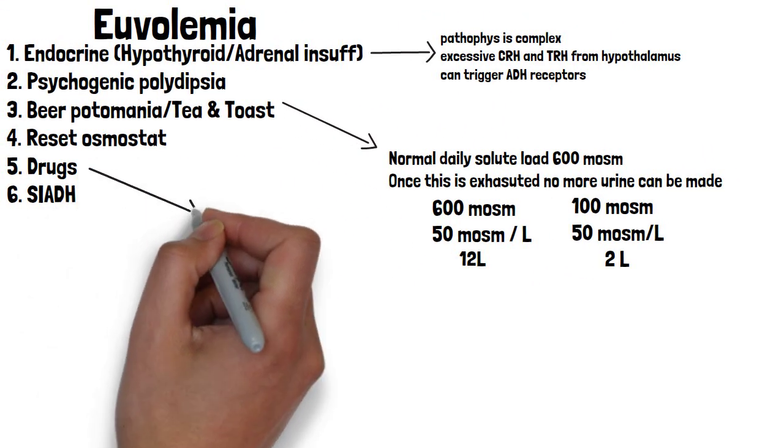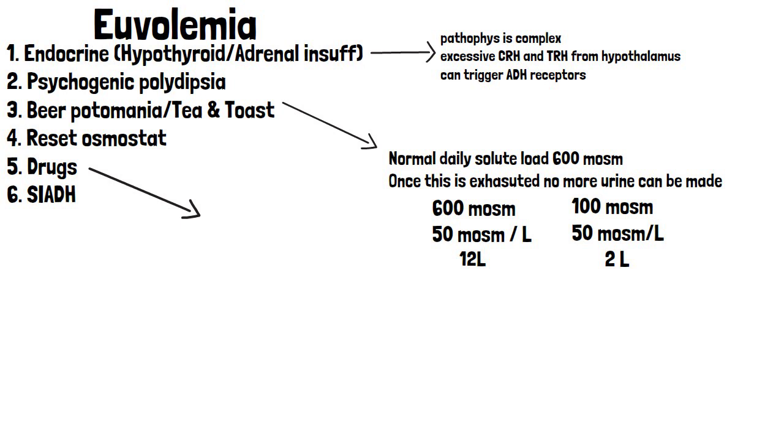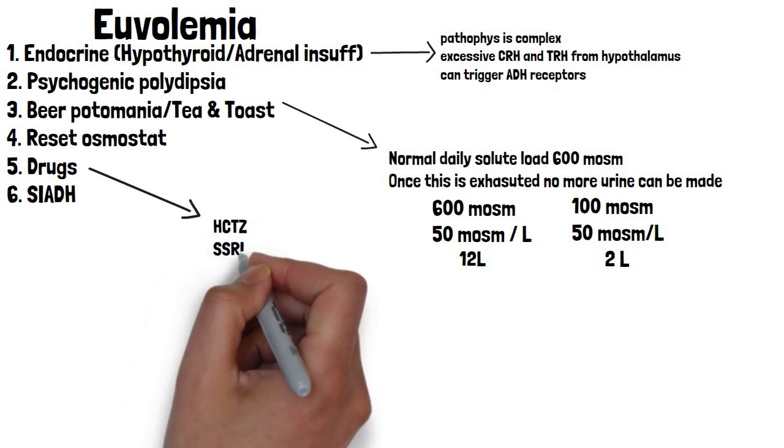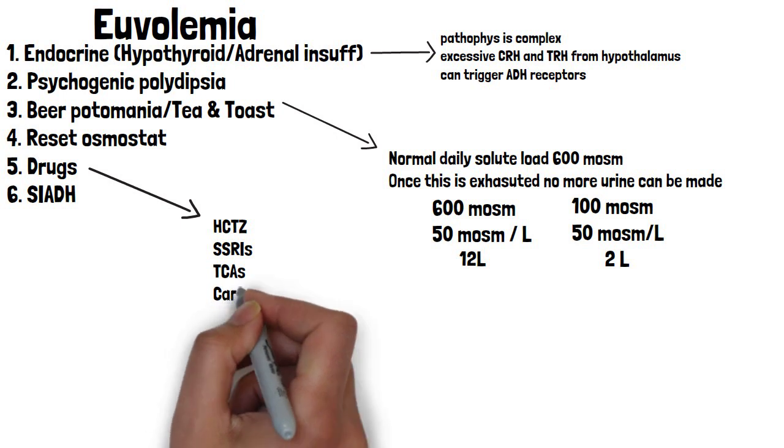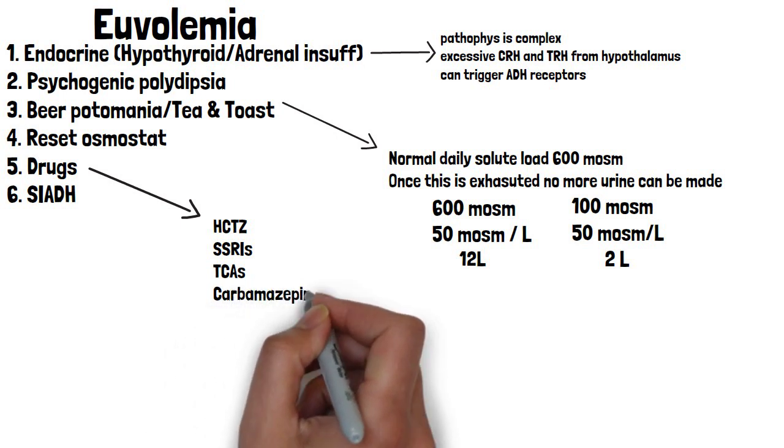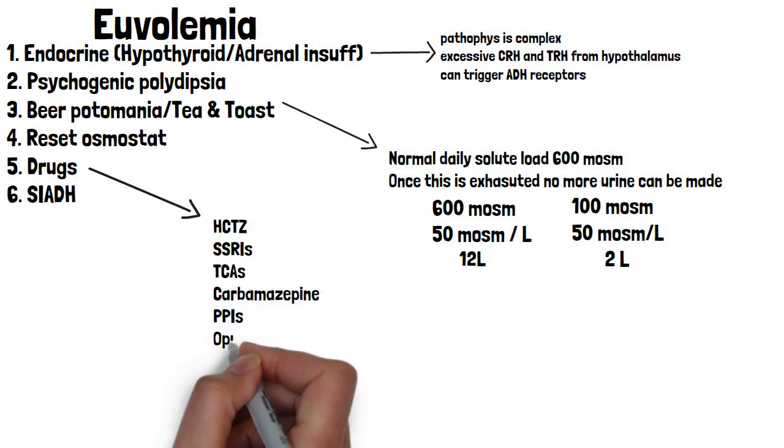With drugs that cause hyponatremia, there's a long list. Here are just some of the more common ones. Just remember anything that's a diuretic or anything that does anything to your brain chemistry can do this. There's also PPIs and opiates on that list.